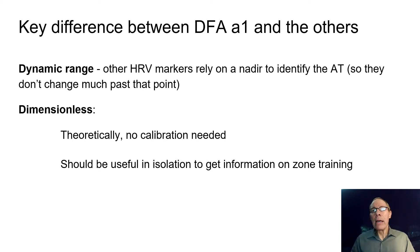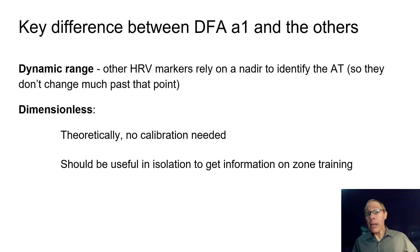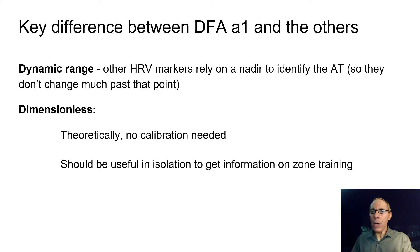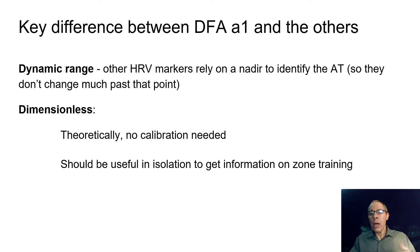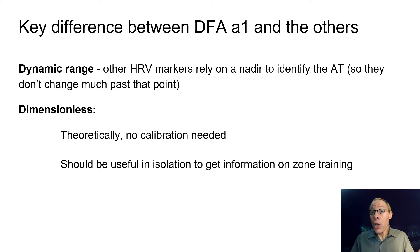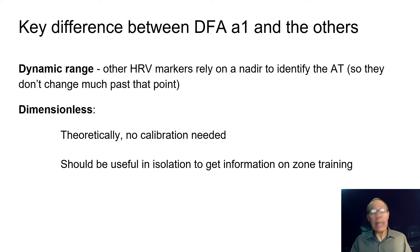The key difference between alpha 1 and the other parameters comes down to two main factors. One is dynamic range — the other HRV markers, particularly SD1 and SDNN, rely on reaching a nadir. They come down, plateau, and that plateau is where the aerobic threshold occurs; past that point they don't change. The other factor is that alpha 1 is dimensionless, so theoretically no calibration is needed. If you put a heart rate monitor on somebody and record their RR intervals, you can get an idea of their intensity markers without any calibration.